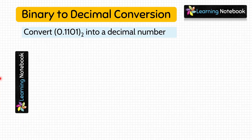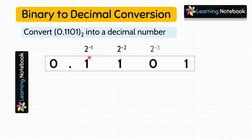Let's do two more questions so it becomes crystal clear. Question: convert binary number 0.1101 into a decimal number. First, let's write the place values of all the digits: 2⁻¹, 2⁻², 2⁻³, and 2⁻⁴.